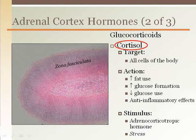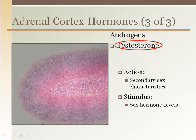Adrenocorticotropic hormone from the anterior pituitary gland is the main stimulus to release glucocorticoids, which is primarily the effect of stress as perceived by the brain and detected by the hypothalamus. The zona reticularis secretes sex hormones, primarily androgens like testosterone.